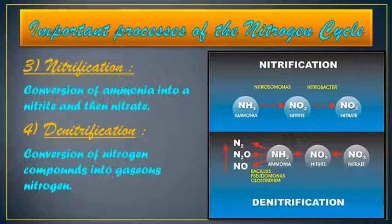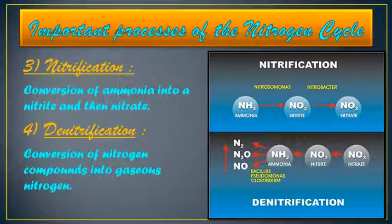The fourth process is denitrification, which is the conversion of nitrogen compounds back into gaseous nitrogen. Nitrate is converted into nitrite (NO2), and lastly it is converted into ammonia. This is carried out by nitrogen-fixing bacteria such as Bacillus, Pseudomonas, and Clostridium, which convert nitrates and nitrites into ammonia. These are all four processes of the nitrogen cycle.